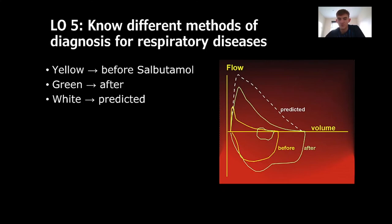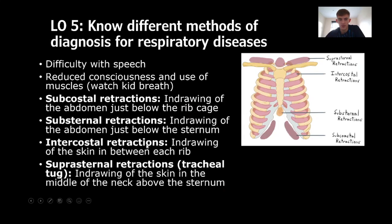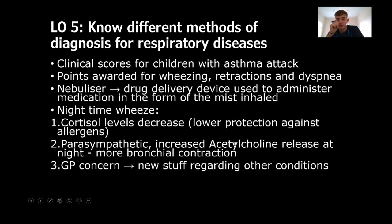Muscle observation is particularly useful in children who may not cooperate well with spirometry tests, as they may have difficulty maintaining a full exhalation or controlling their breathing. Watching how the child breathes and how their respiratory muscles contract can give useful clinical information. Clinical scoring systems assign points for retractions and dyspnea; the more points scored, the more severe the condition.